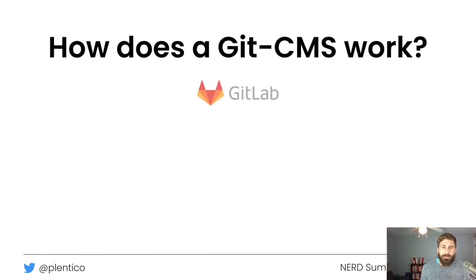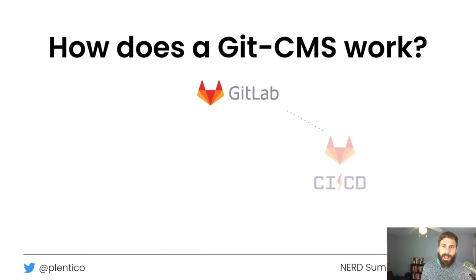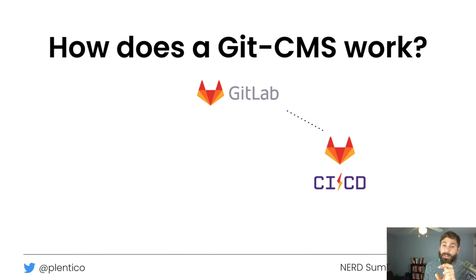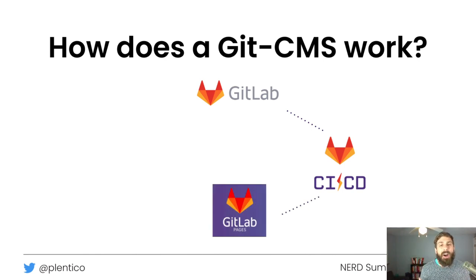So how does a Git CMS really work? Let's use GitLab as an example. Plenty has an OAuth integration with GitLab. GitLab has CICD — continuous integration/continuous delivery — which is essentially a Docker container that spins up to do the work. If a change happens in the GitLab repository, that notifies CICD and triggers your build. It rebuilds your site completely, then CICD deploys it to a hosted environment like GitLab Pages, which is a free hosting solution GitLab offers.